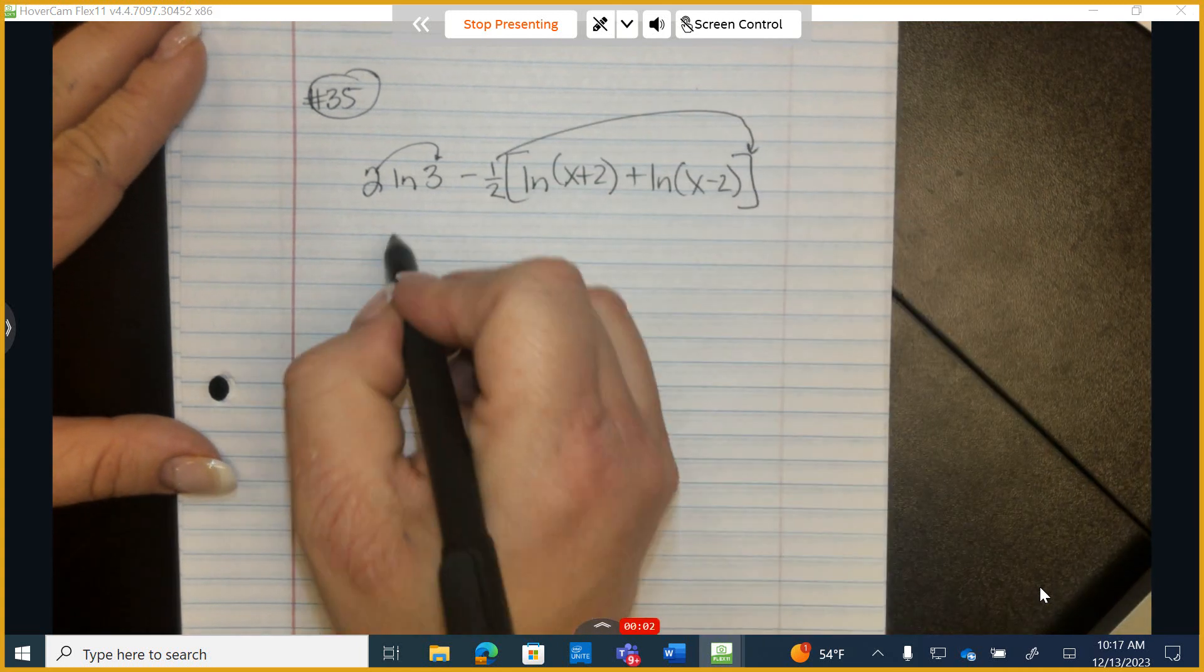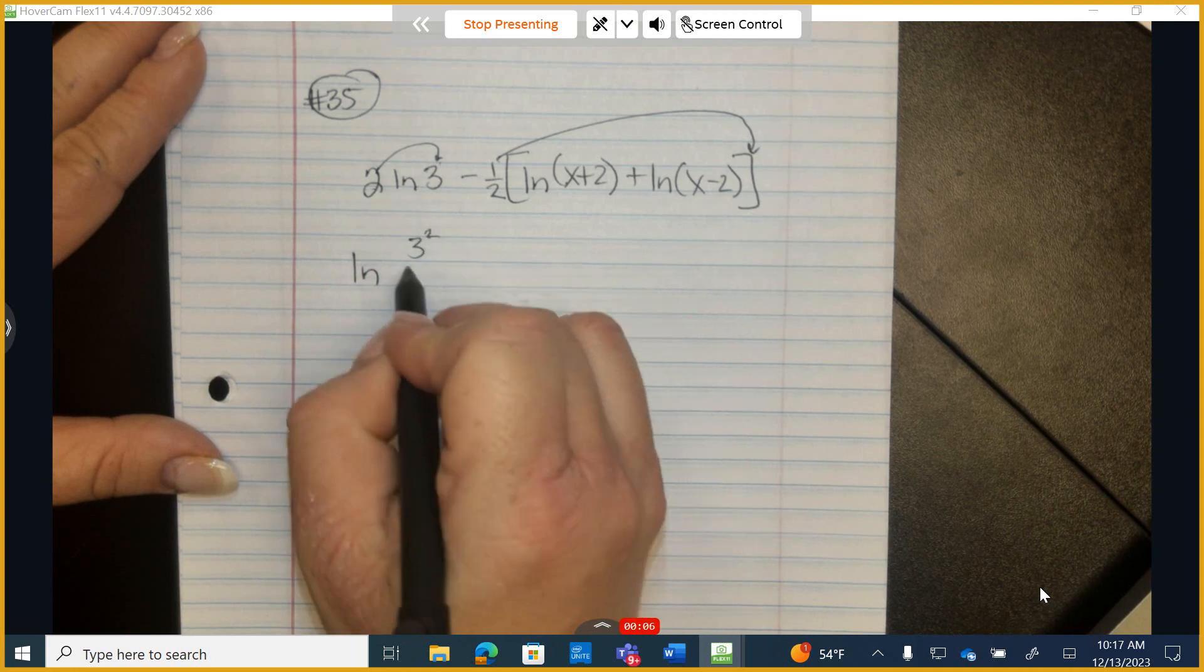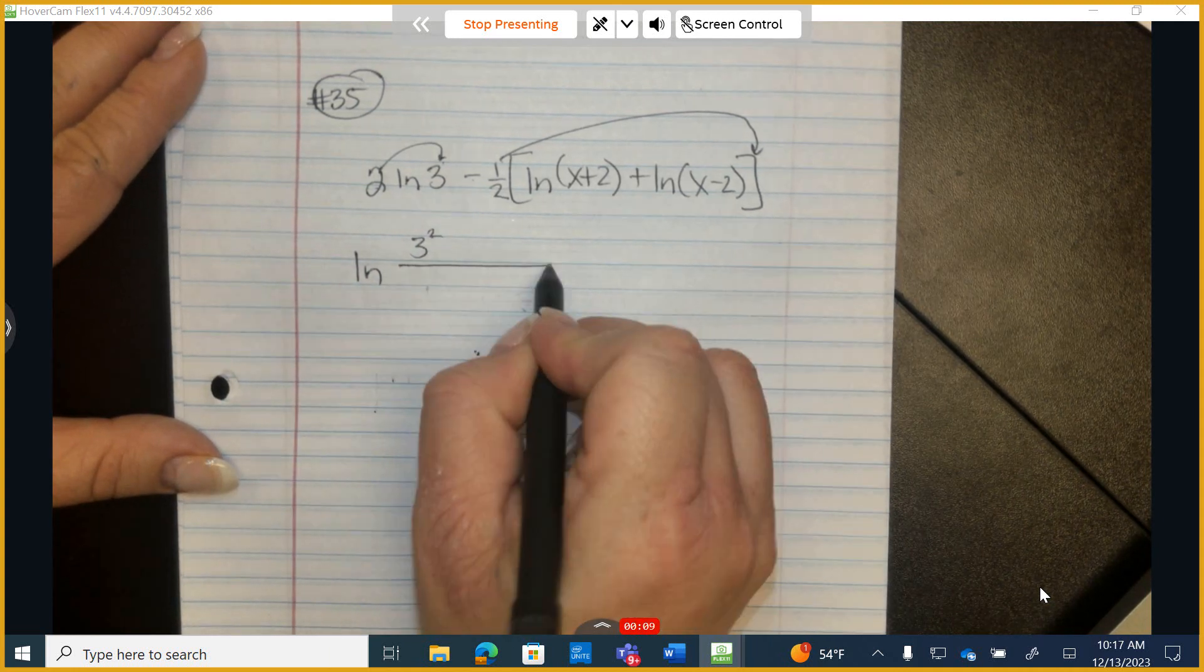Exponent, and this also becomes the exponent. So I have ln of 3 squared. Subtraction, when we put it in condensed form, turns to division.